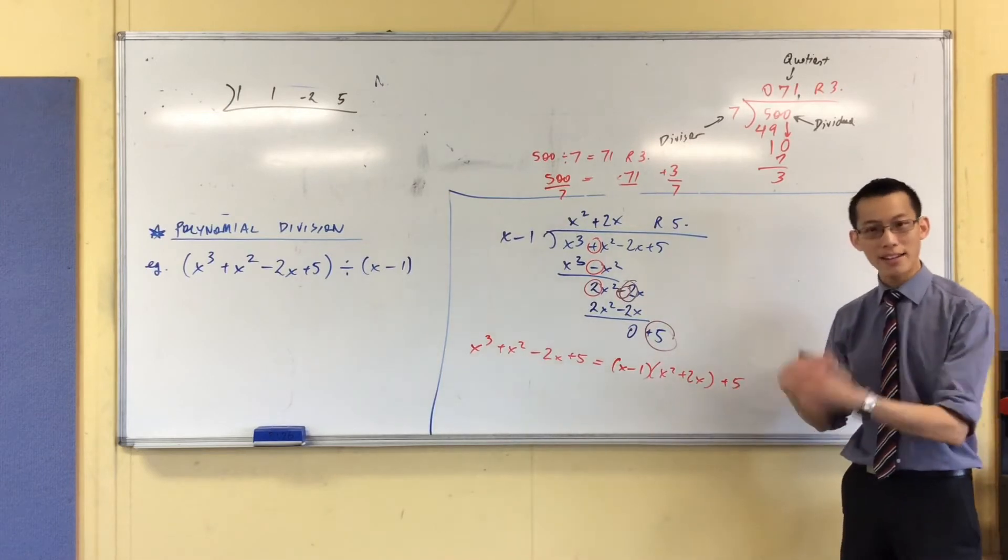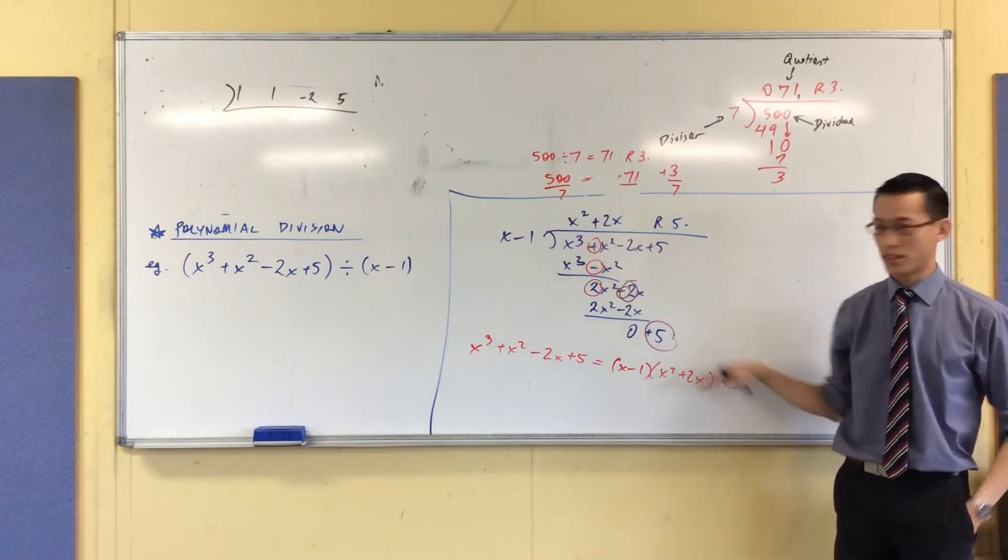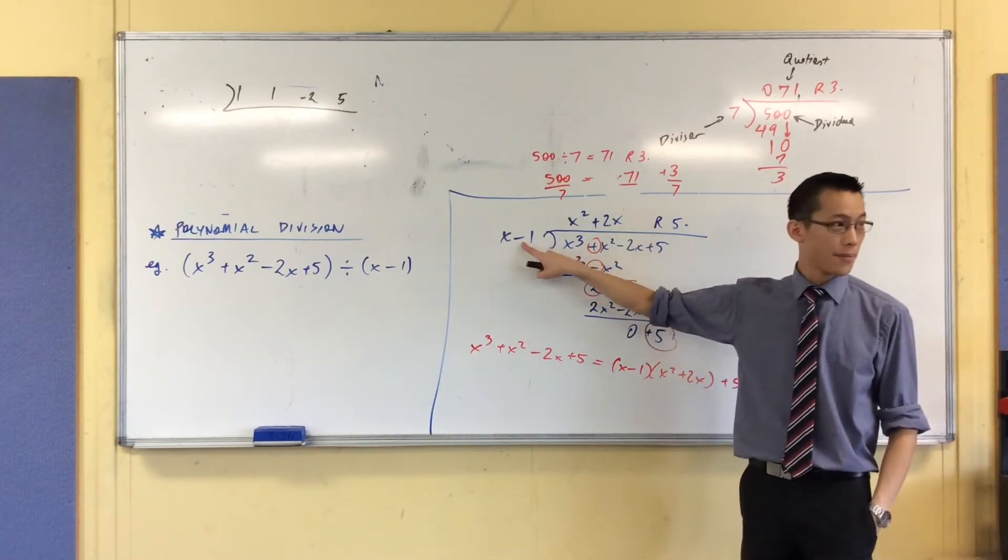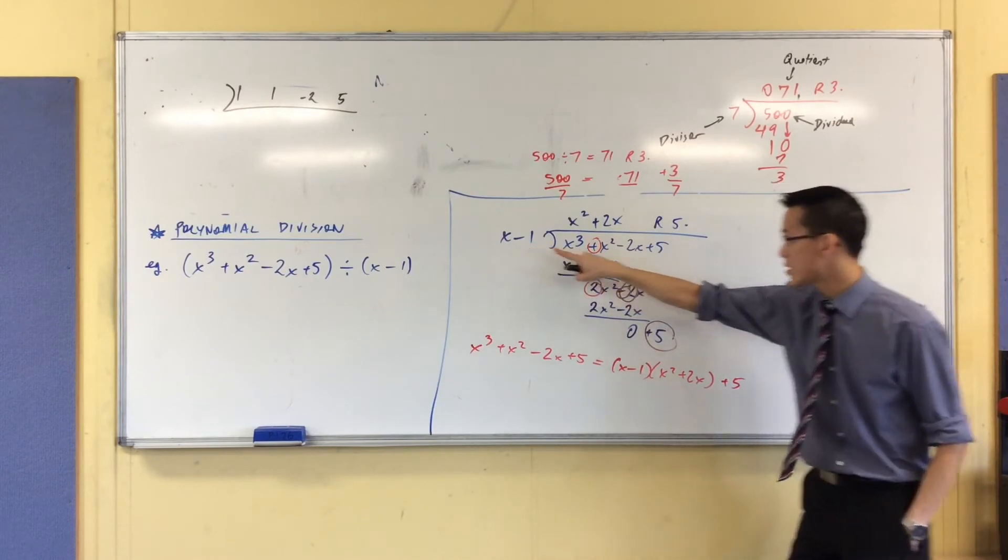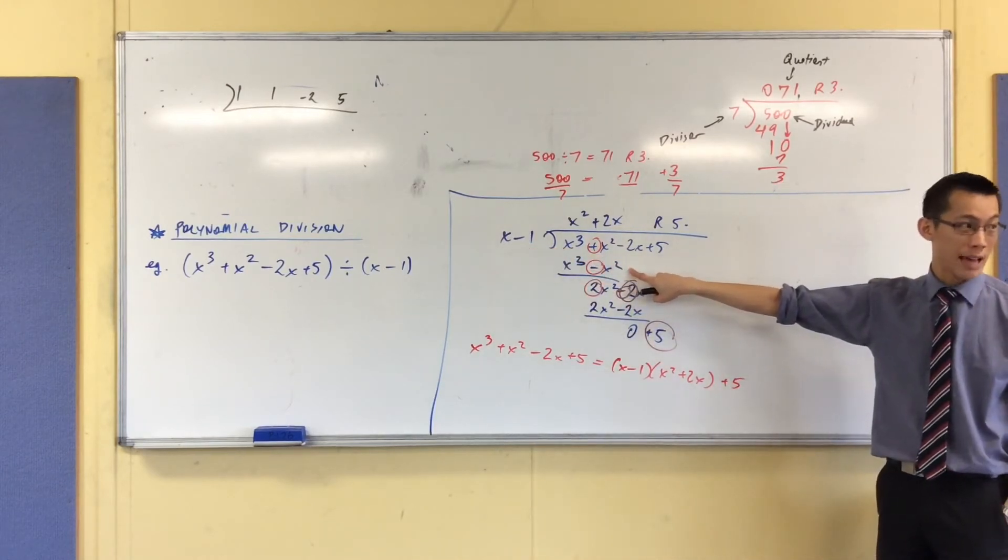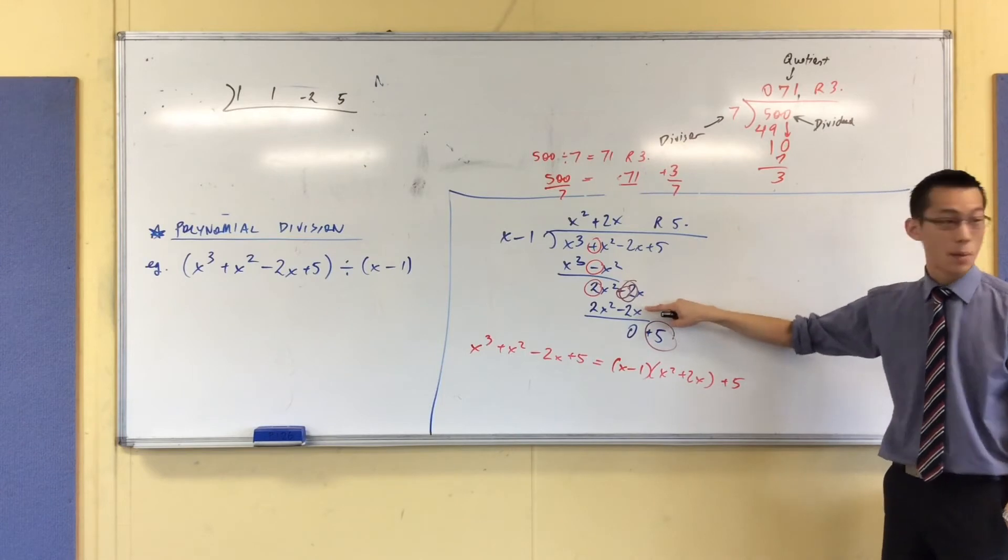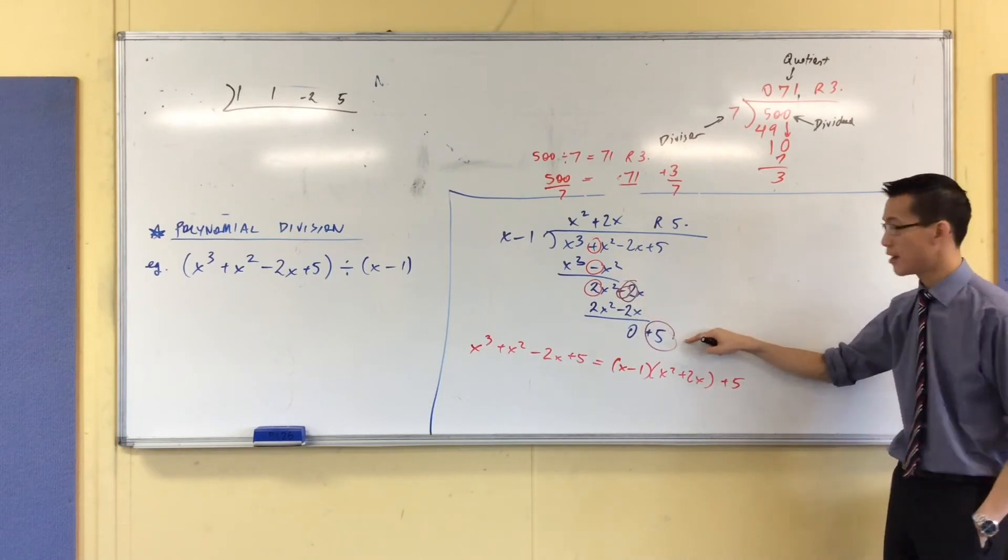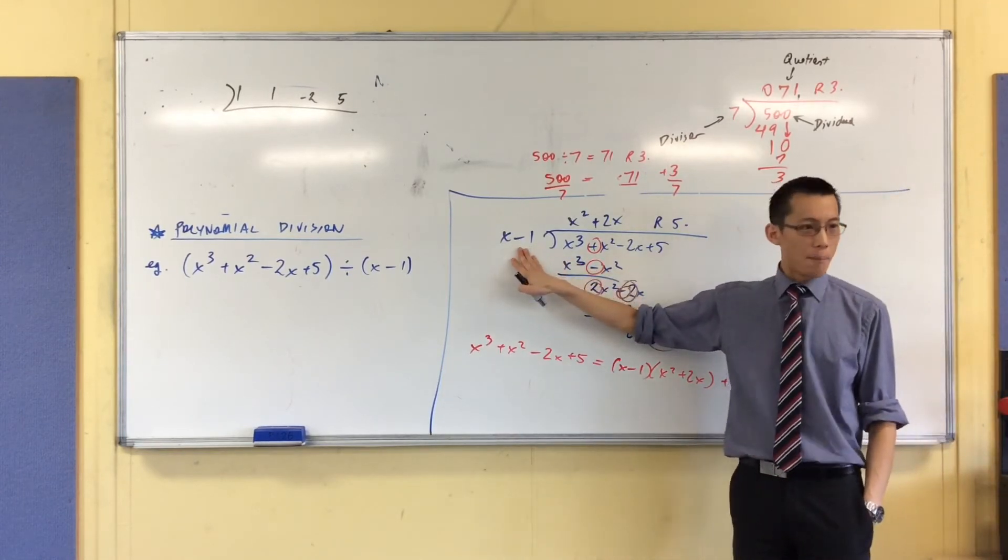So in order to counter that, all of these subtractions happen from this number, right? Did you notice that? You get this goes over here. That's what makes the minus x squared. It's what makes the minus 2x and so on.